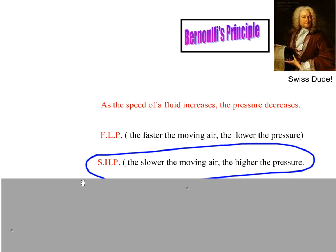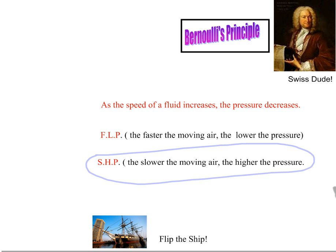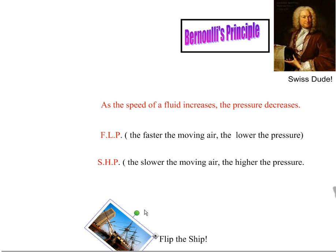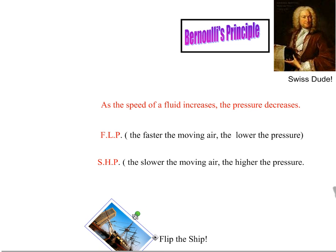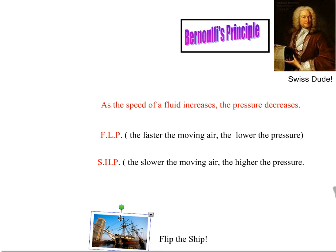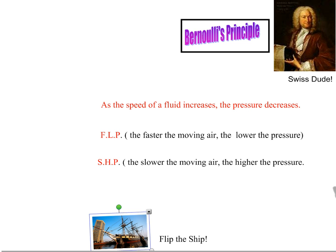So we have FLP and SHIP for Bernoulli. To remember it, we say we're going to FLP the SHIP for Bernoulli — FLP: faster moving air, lower pressure; SHIP: slower moving air, higher pressure.